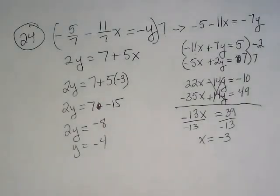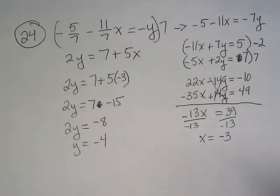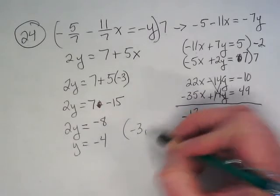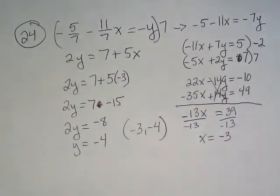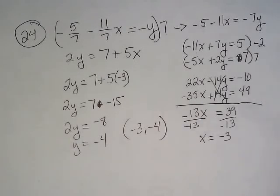I got negative 4. 7 minus 15 gives us negative 8. Negative 8 divided by 2 gives us negative 4.